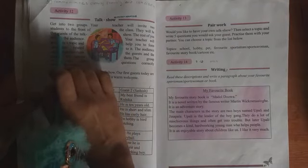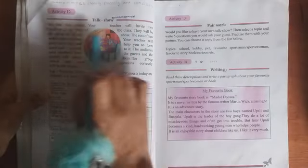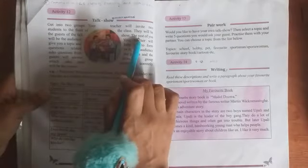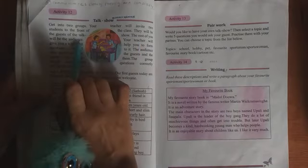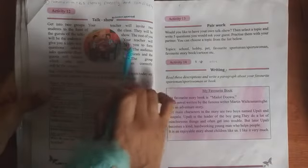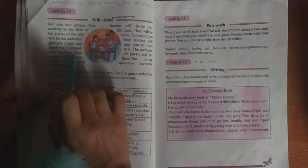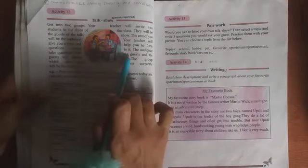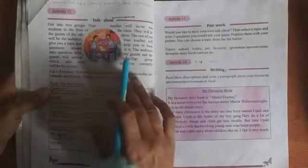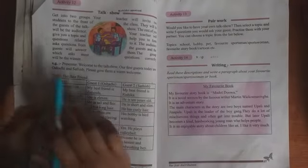Get into two groups, your students. Your teacher will invite two students to the front of the class. They will be the guests of the talk show. The rest of you will be the audience. Audience means prekshake. Your teacher will give you a topic and help you form questions related to it. The audience asks questions from the guests and the guests will answer them. The group which asks most questions correctly will be the winner. So this is a group activity that you have to do in school.